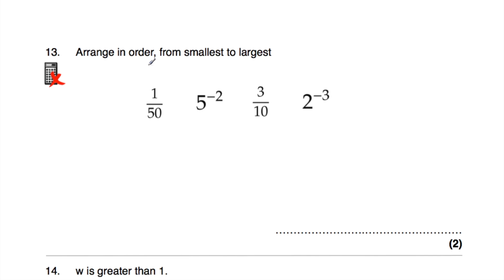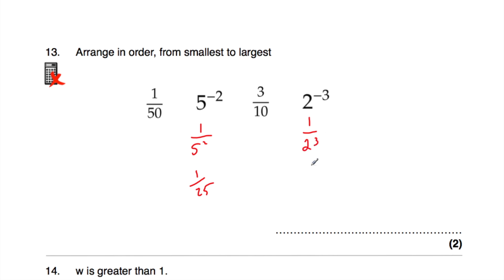Question 13: arrange in order from smallest to largest: 1 fiftieth, 5 to the power of negative 2, 3 tenths, and 2 to the power of negative 3. First, convert the powers: 5 to the power of negative 2 is 1 over 25 (since 5 squared is 25). 2 to the power of negative 3 is 1 over 8 (since 2 cubed is 8). So we have: 1 fiftieth, 1 twenty-fifth, 3 tenths, and 1 eighth.